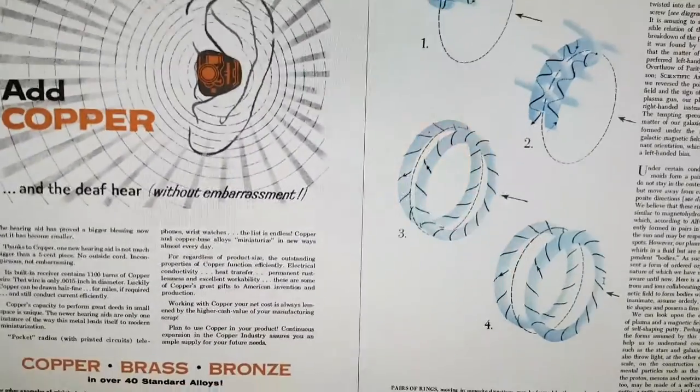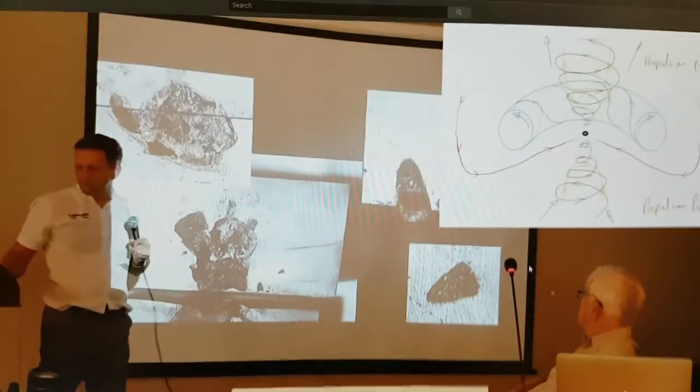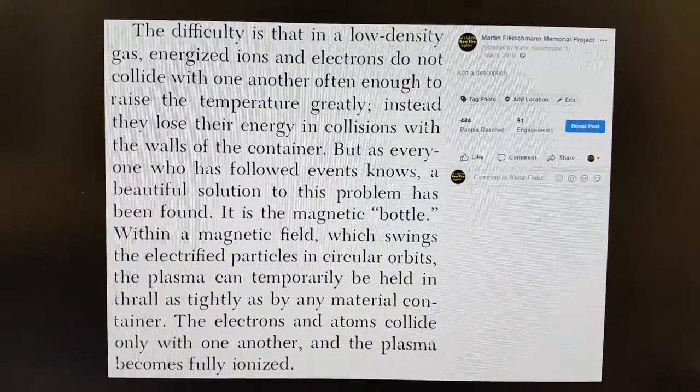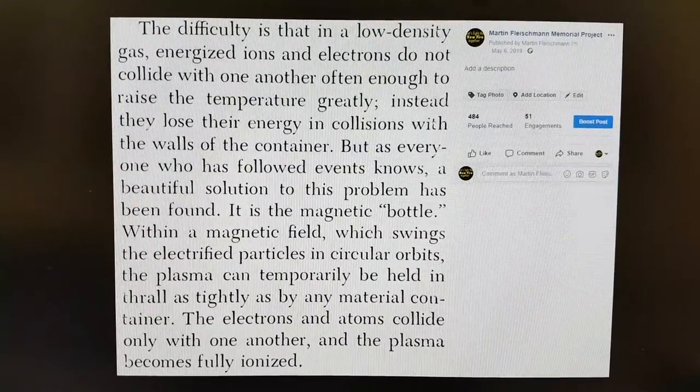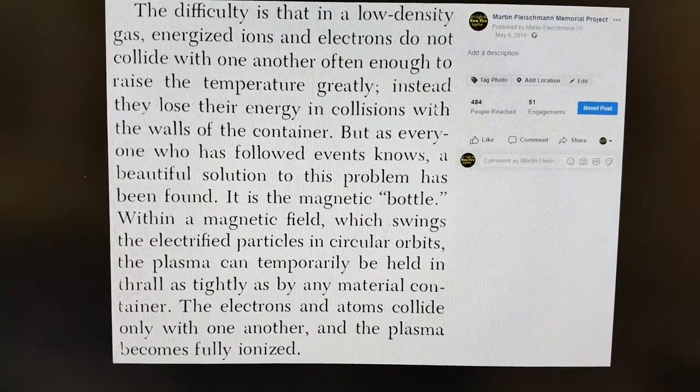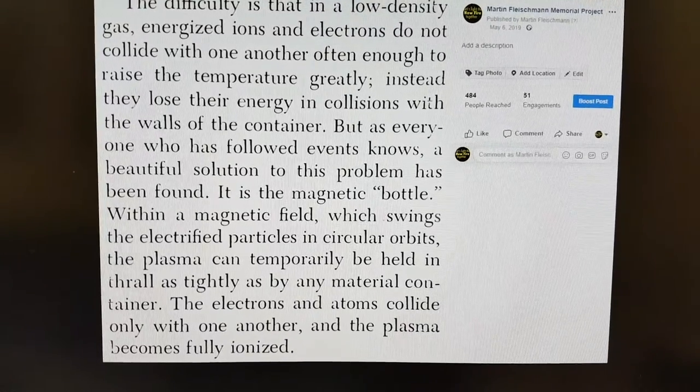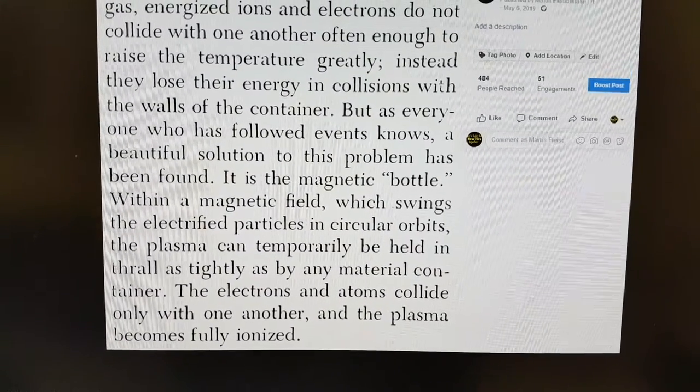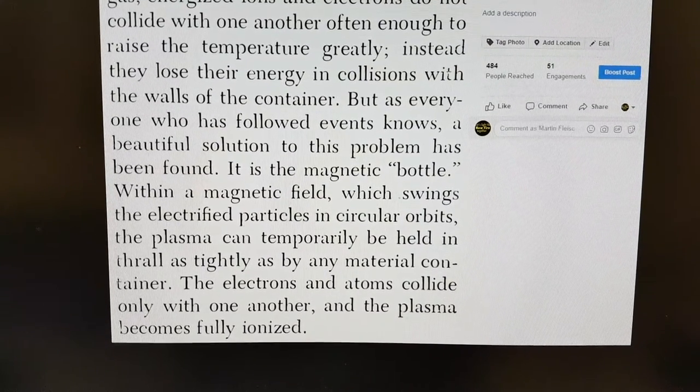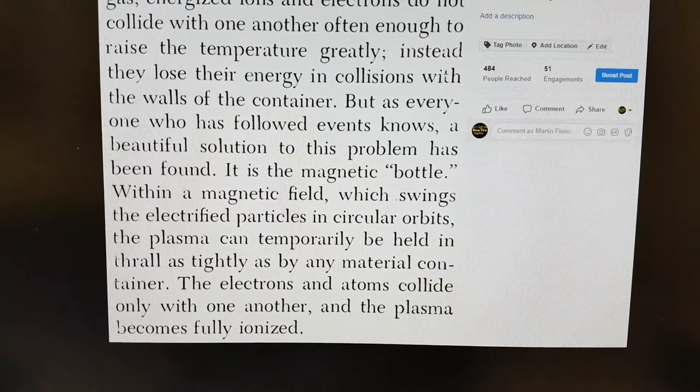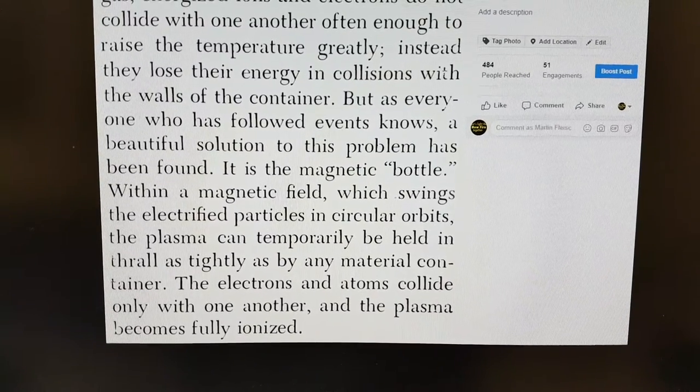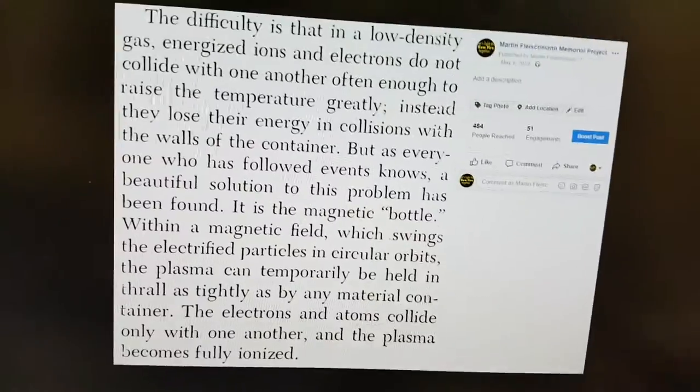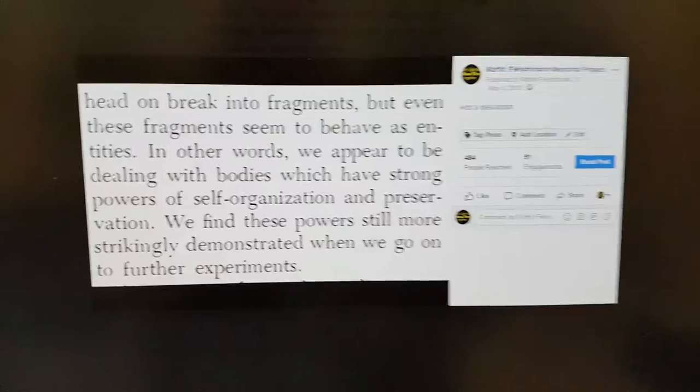There's a couple of pieces of text in here I just want to read before I go forward. This is the posting on our Facebook. The difficulty is that in a low density gas, energized ions and electrons do not collide with one another often enough to raise the temperature greatly. Instead, they lose their energy in collisions with the walls of the container. But as everyone knows who has followed the events, a beautiful solution to this problem has been found. It is the magnetic bottle within the magnetic field which swings the electrified particles in circular orbits. The plasma can temporarily be held in a thrall as tightly as by any material container. The electrons and atoms collide only with one another and the plasma becomes fully ionized. This is kind of his description about how you do this. It's actually caught in its own magnetic bottle when it's in the toroid form.